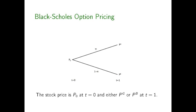In these simple two-date, two-state models, we use event trees to describe the payouts on various risky assets. Here is the event tree describing the price and payout for the stock: the stock price is P0 at T equals zero, and then with probability pi it goes to PG, and with probability one minus pi it goes to PB at time T equals one.